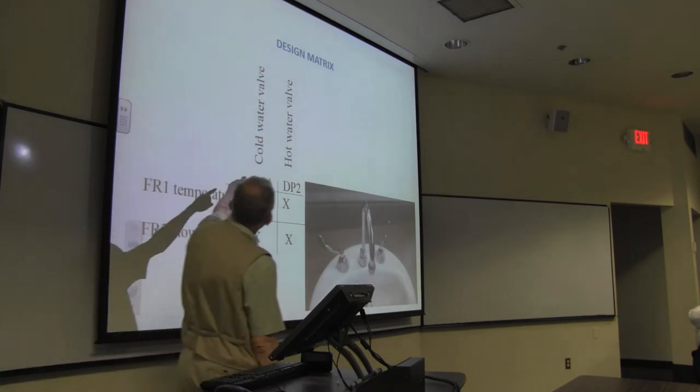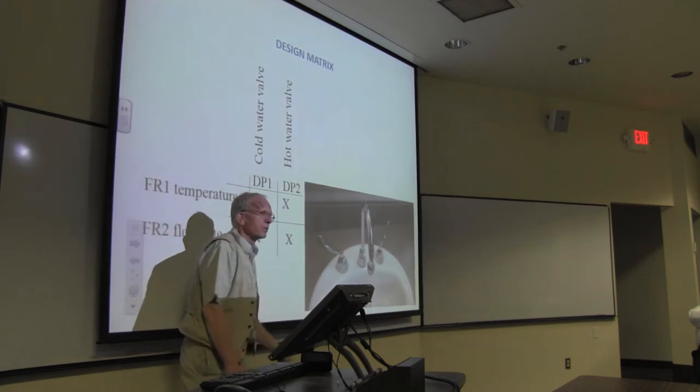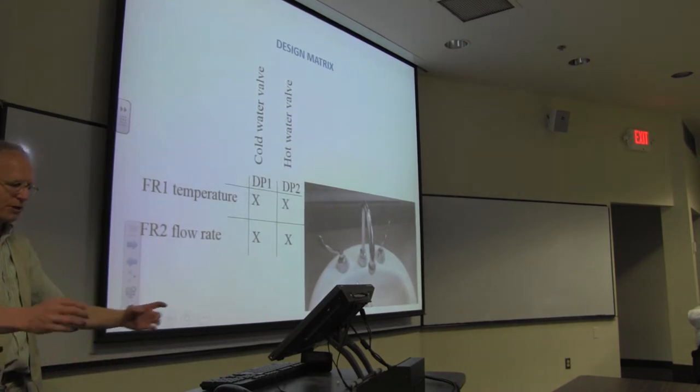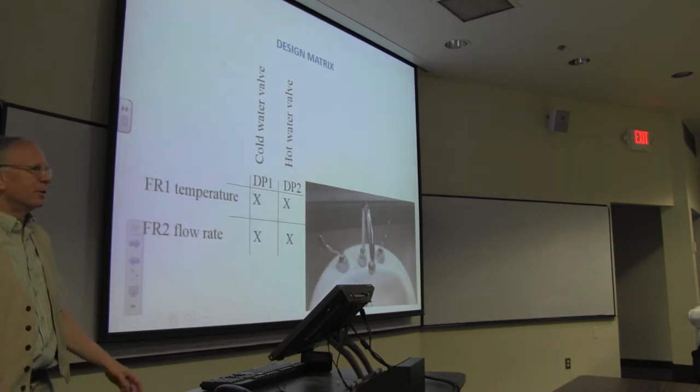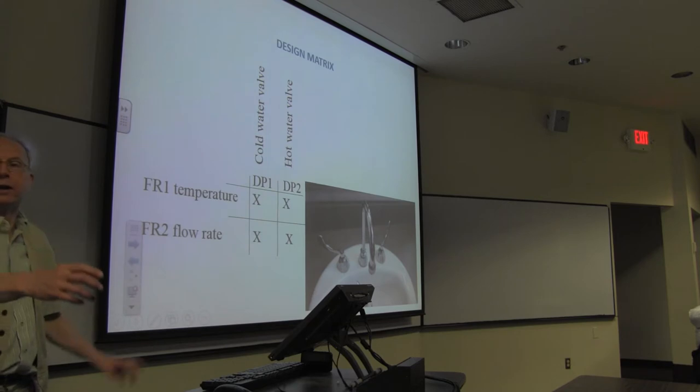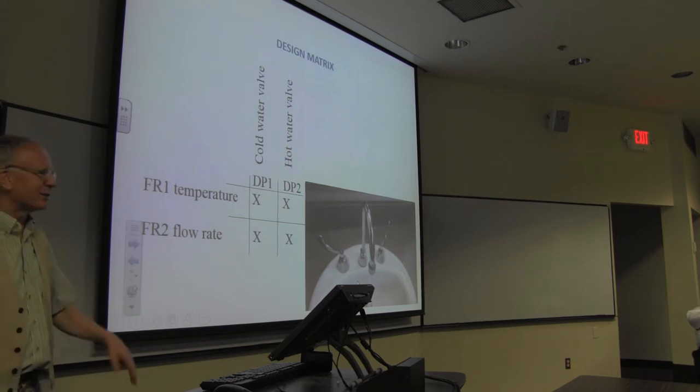So the customer is the actual person washing their hands. What do they want? We probably want water at the desired temperature and the desired flow rate. So what do we got? We have two controls: the hot water valve and the cold water valve. If we change the cold water valve, we're changing both the temperature and the flow rate. Same with the hot water valve.